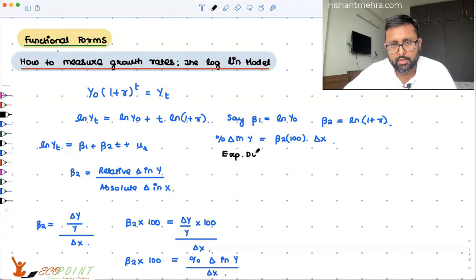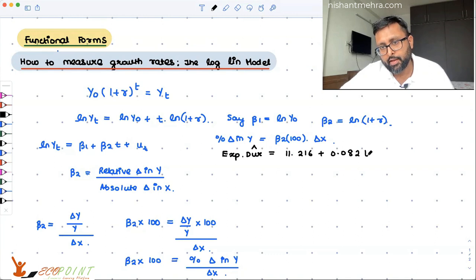So if I have, let us say, this: expenditure on durable goods and services. I have estimated this equation, means your book has estimated this, and 0.082*T like this.